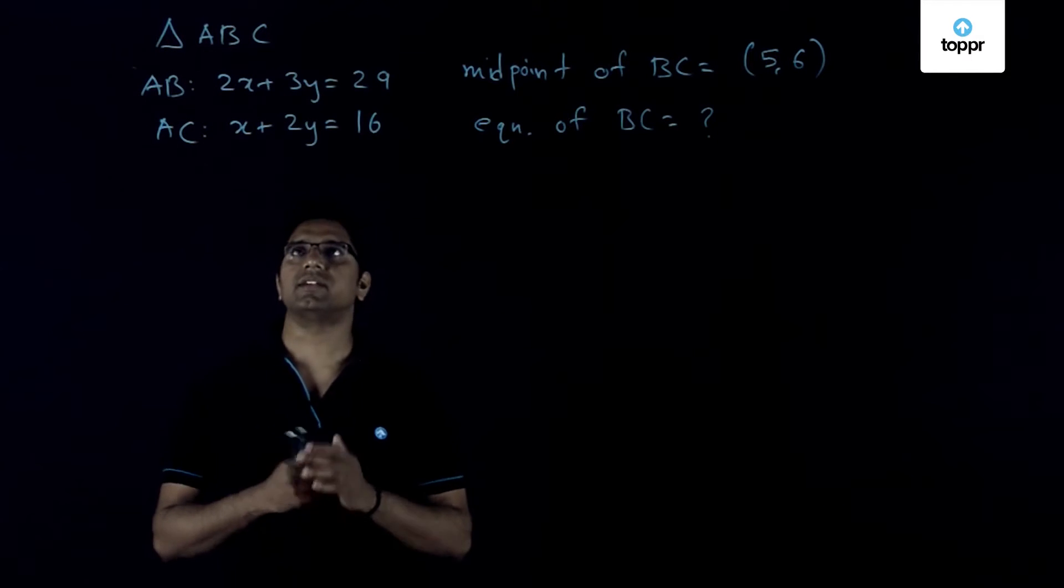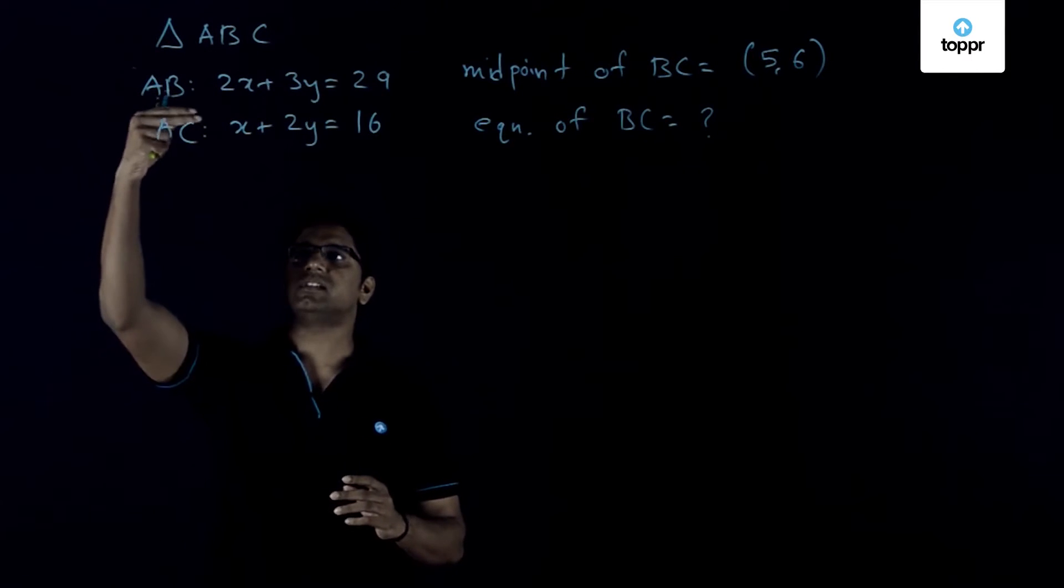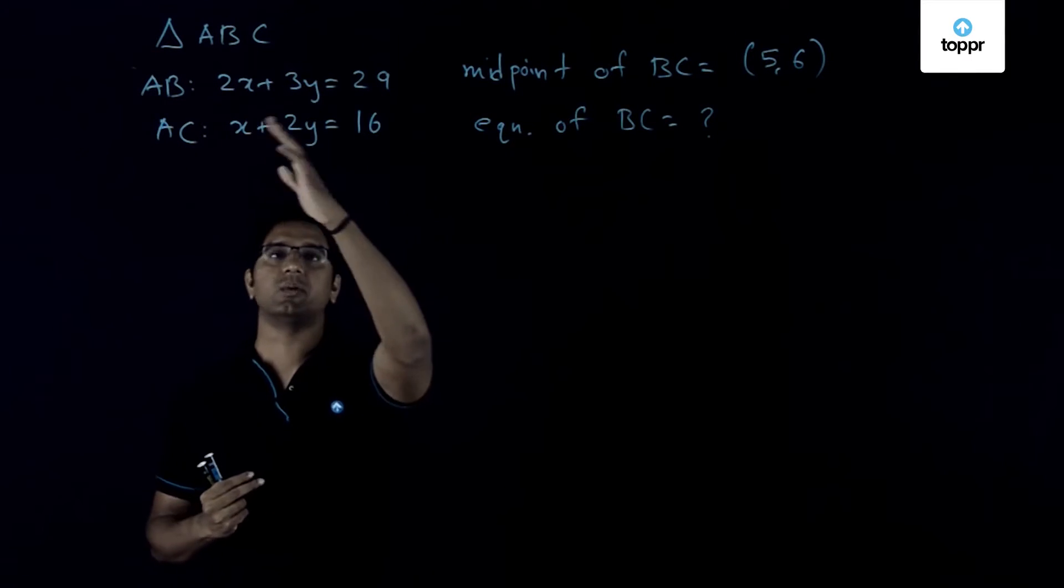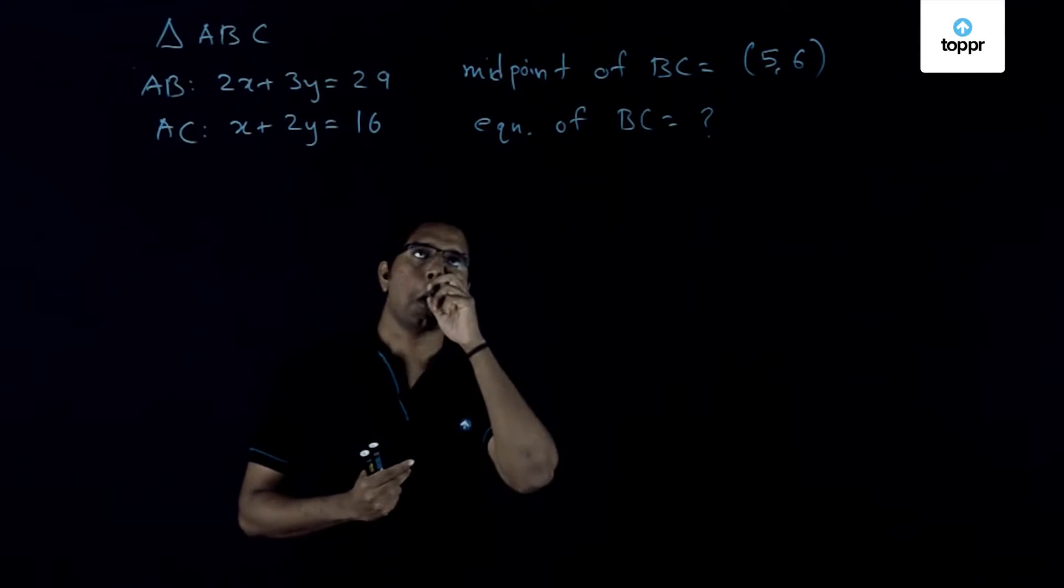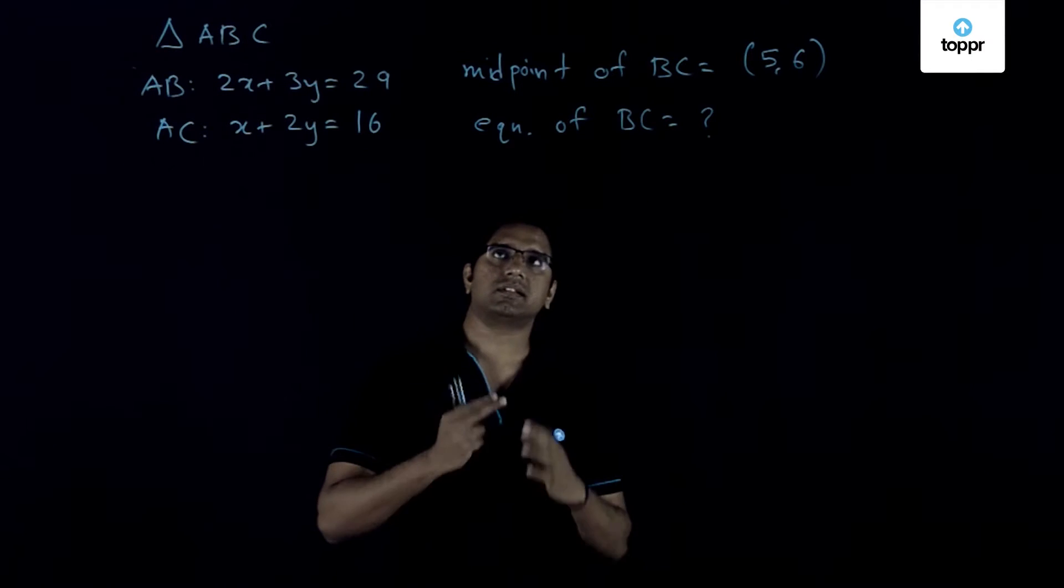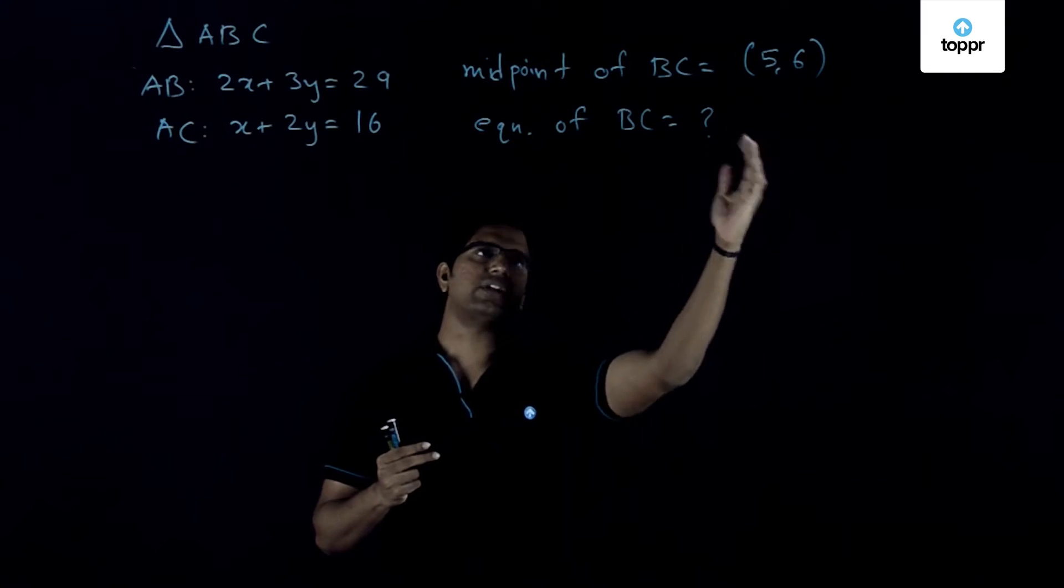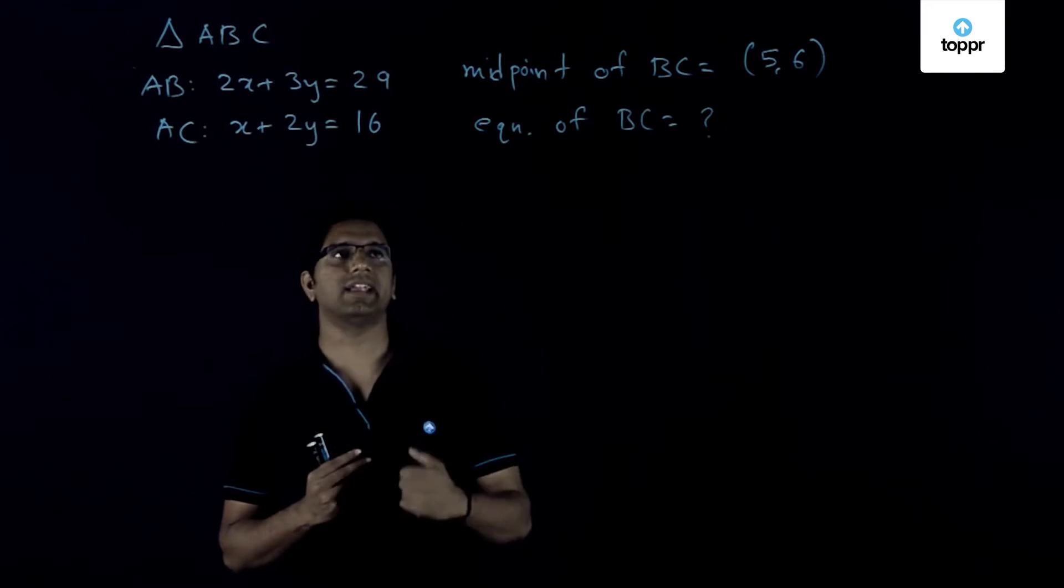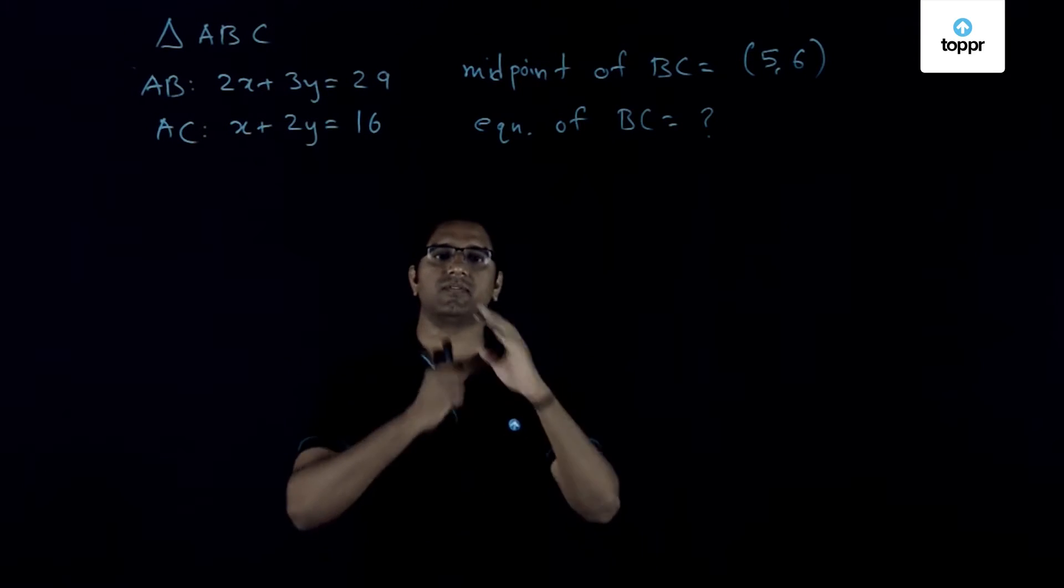In this problem, we have been given that in triangle ABC, the sides AB and AC, their equations are given explicitly. Further, it's given that the midpoint of BC is the point (5,6). We need to find out what is the equation of BC from this given data.